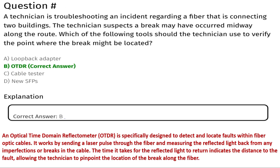The next question is: a technician is troubleshooting an incident regarding a fiber cable connected to buildings. The technician suspects a break may have occurred midway along the route. Which of the following tools should the technician use to verify the point where the break might be located? Option A: loopback adapter, Option B: OTDR, Option C: cable tester, Option D: multimeter. The correct answer is Option B, OTDR.